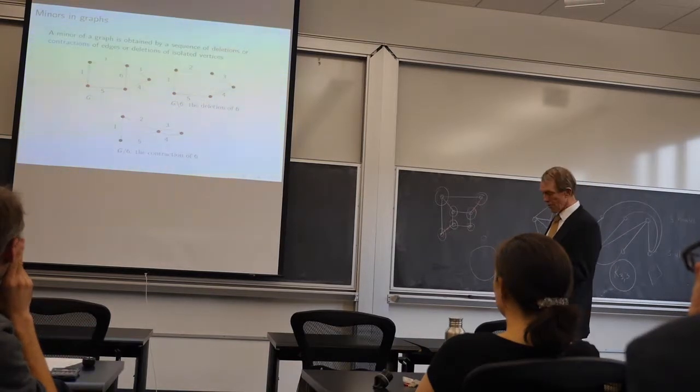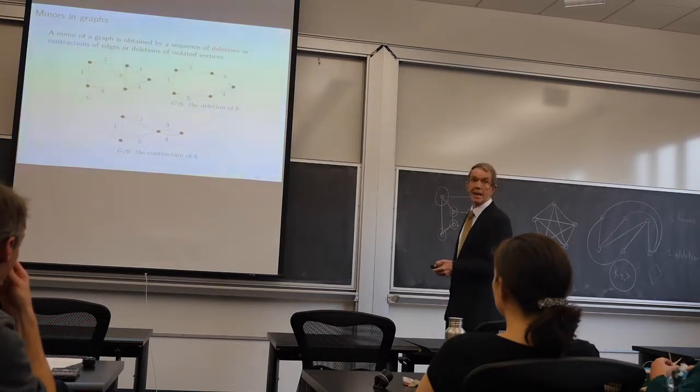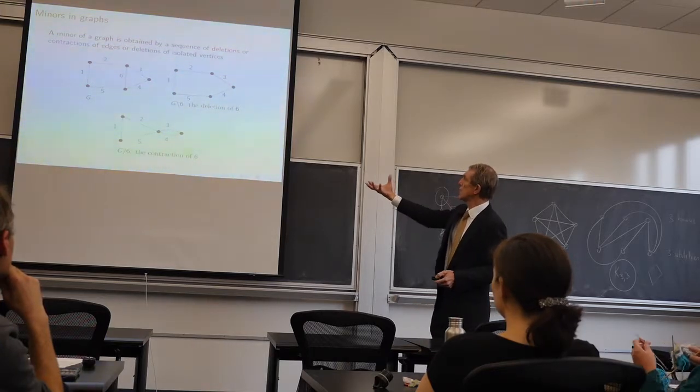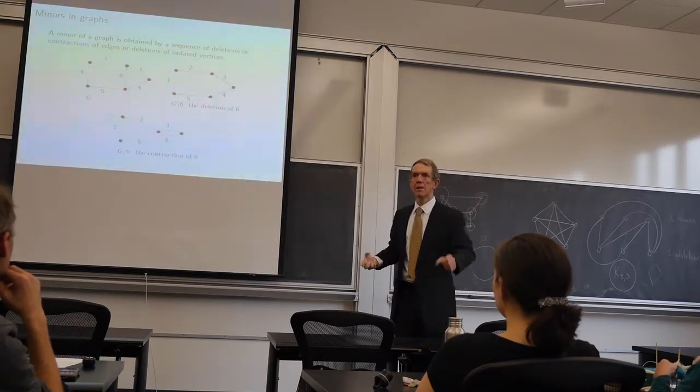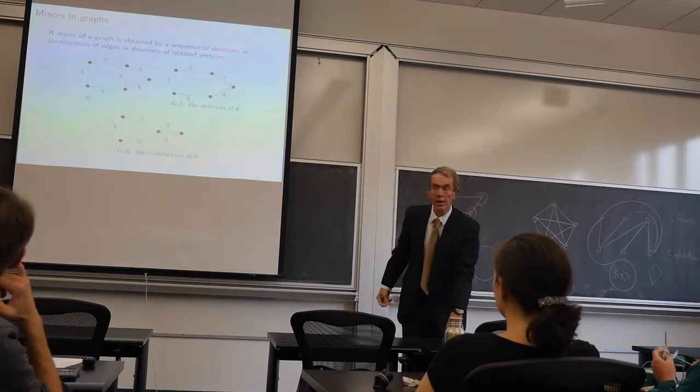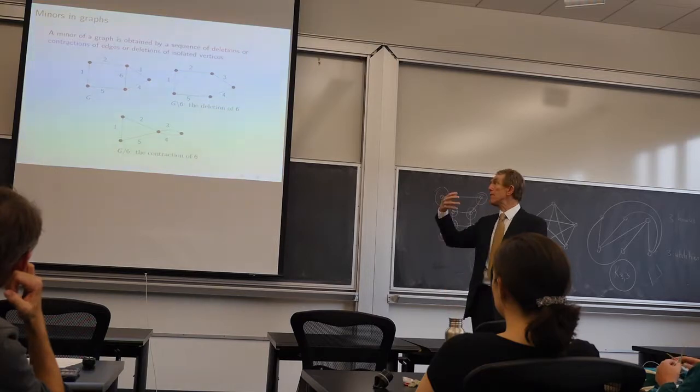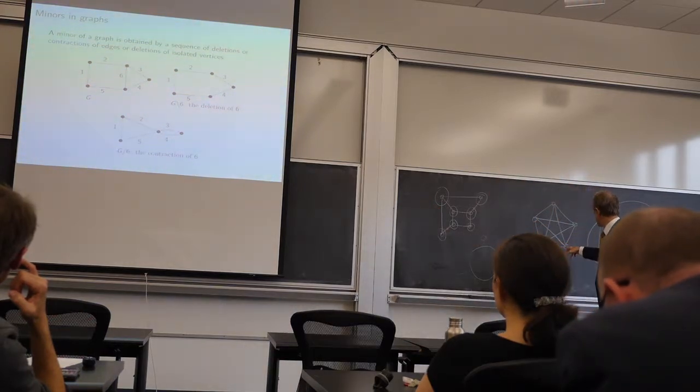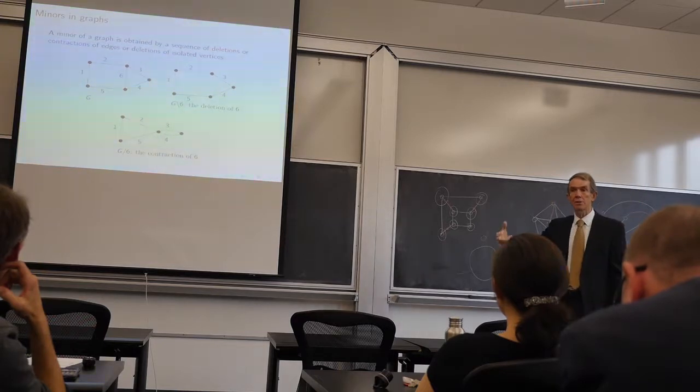Here are two operations, deletion and contraction. Look at this graph here. If I delete the edge six, you can see what I've done. I've just taken the thing and it's gone. Now what did I do when I contracted the edge six? Can you see what's happened? Just sort of smooshed it together. You've essentially shrunk it. Those are deletion and contraction.